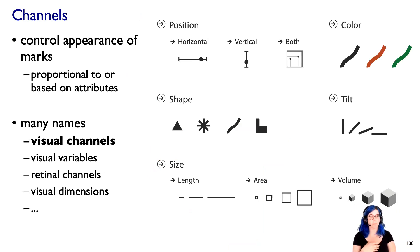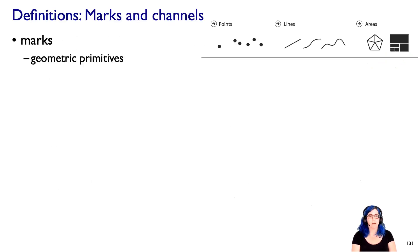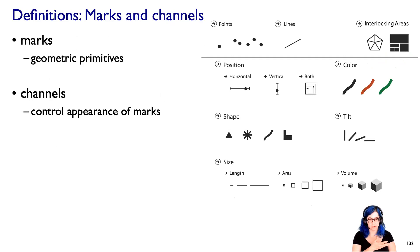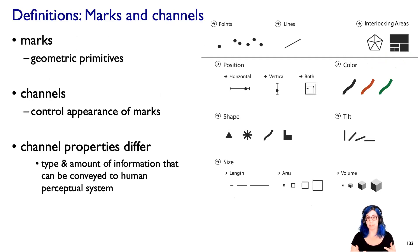Now, people have called these many things. I'm calling them visual channels. You might also see them called visual variables, or retinal channels, or visual dimensions, or aesthetics. There are many ways that people have come up with to talk about these things. A key idea is that channels are not all created equal. They have different properties. Both the type of information and the amount of information that these channels can convey to the human perceptual system is different between the different channels.